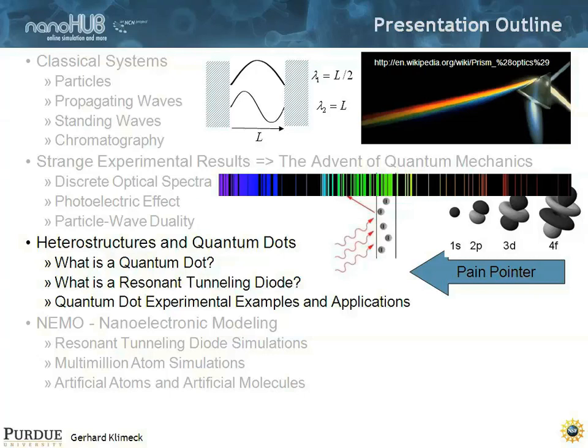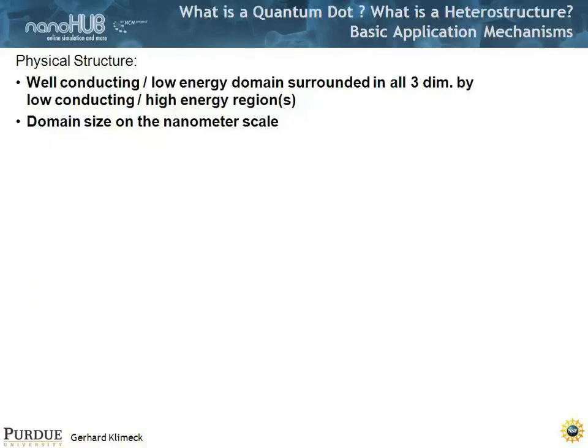So that gets us into figuring out what a quantum dot is and what we can do with it in terms of heterostructures and quantum dots. One way to describe what quantum dots are: it's a well-conducting or low-energy domain surrounded in all three dimensions by a sort of low-conducting, high-energy region.